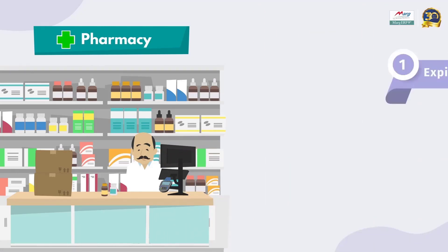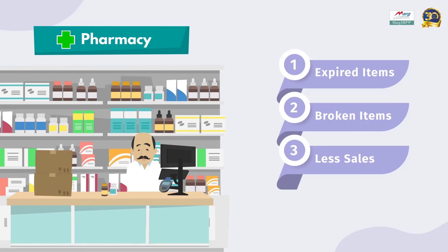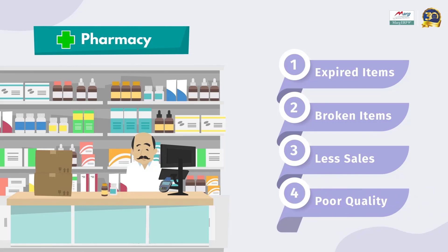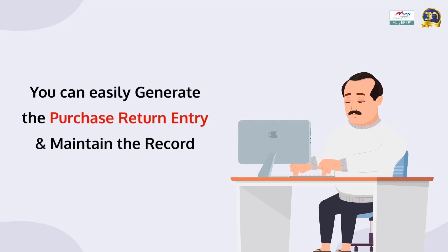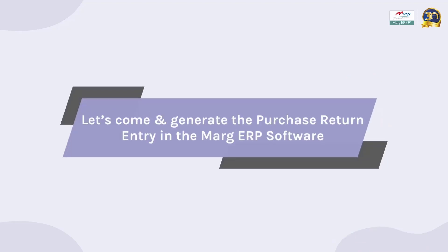Such as items have expired, items are broken, there are some items whose sale in the market is negligible and shopkeepers do not require that stock anymore, or the quality of the stock is not good. So you can easily create the purchase return entry in Mark ERP software and can also maintain their record.